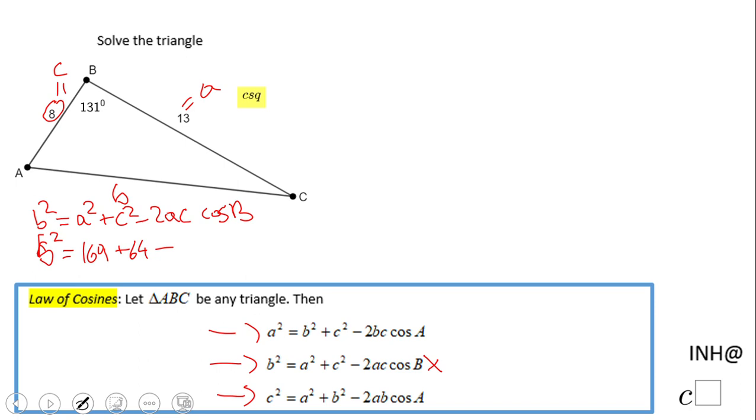Now we can grab a calculator. You can do all this math in the calculator depending on which calculator you have. We have 169 plus 64 minus 208 times cosine of 131. Depending on your calculator, you can put this in one time or do multiple steps.